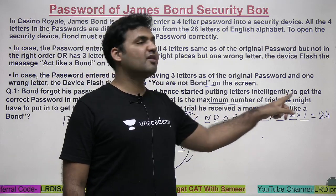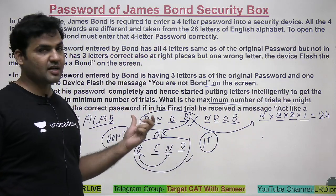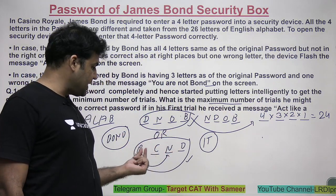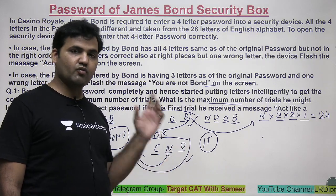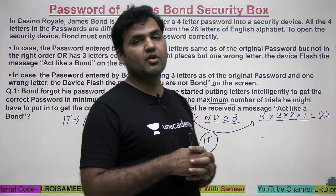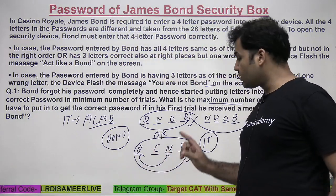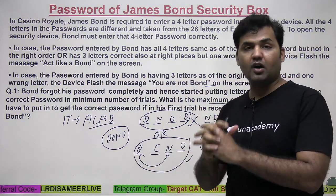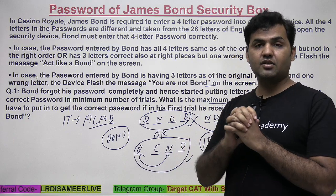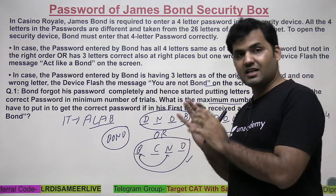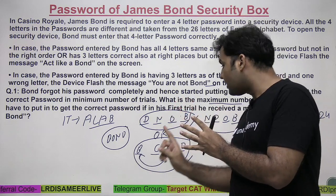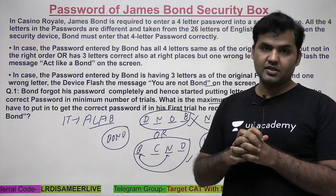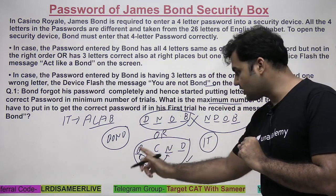Now for the second case: if Bond found that three letters are at their own correct positions but one letter is wrong, he himself doesn't know which of the four letters is the wrong one. So the first thing he needs to do is identify which of the four letters is wrong — and also which three letters are at their correct places.